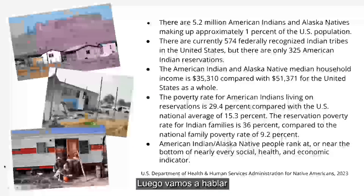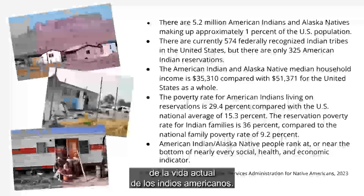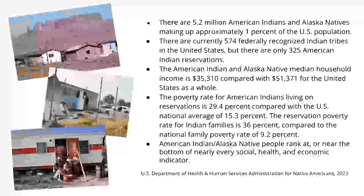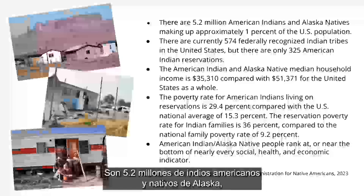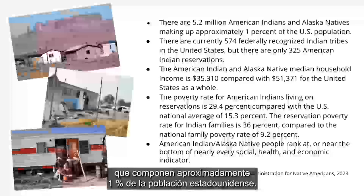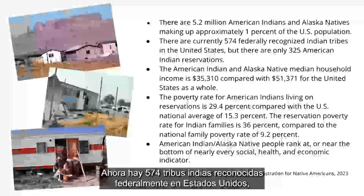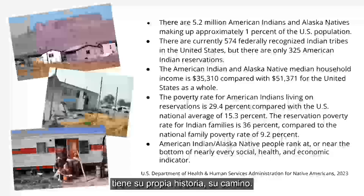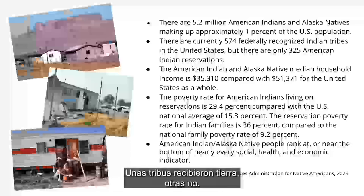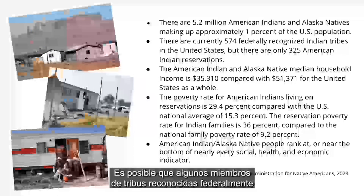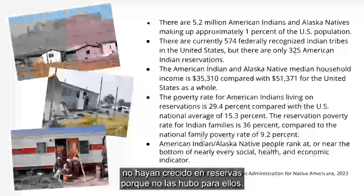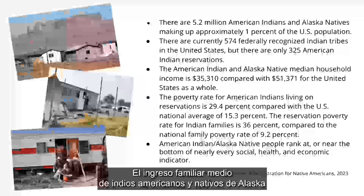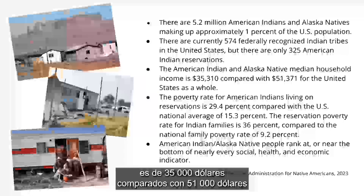Now let's talk about some difficult statistics around contemporary life of American Indians. There are 5.2 million American Indians and Alaska Natives, making up approximately one percent of the U.S. population. There are currently 574 federally recognized Indian tribes in the United States — that often surprises people, who usually think it's much less. But there are only 325 Indian reservations, which means some tribes don't have a reservation for members to live on. The American Indian and Alaska Native median household income is $35,000 compared to $51,000 for the United States as a whole.